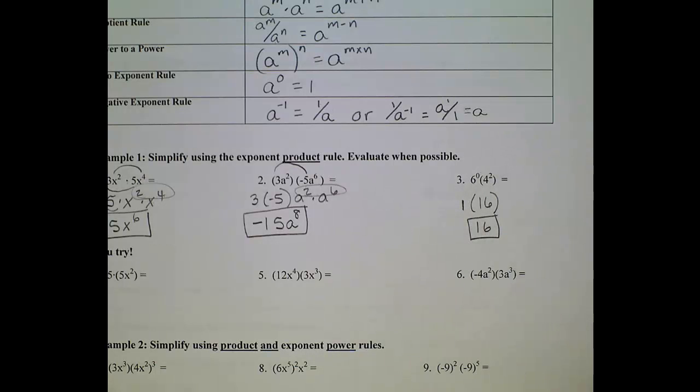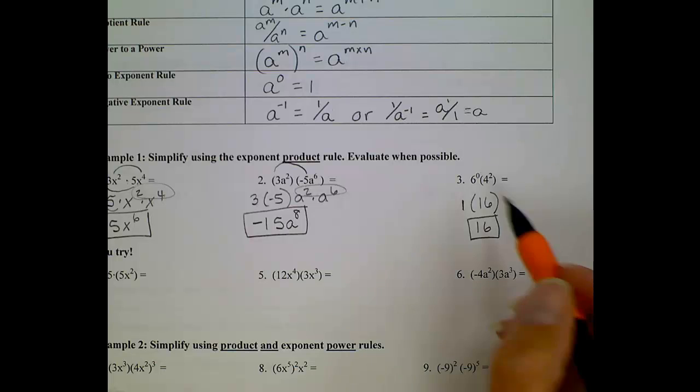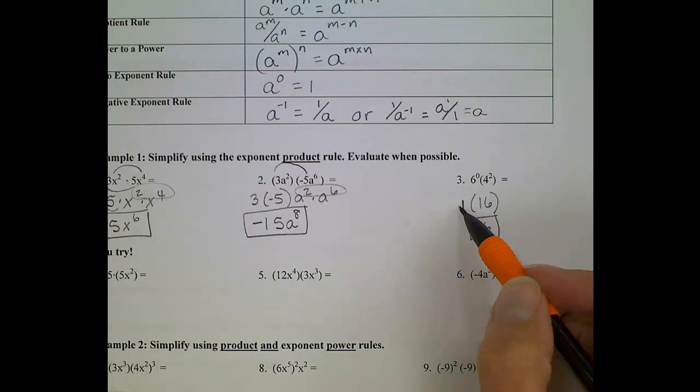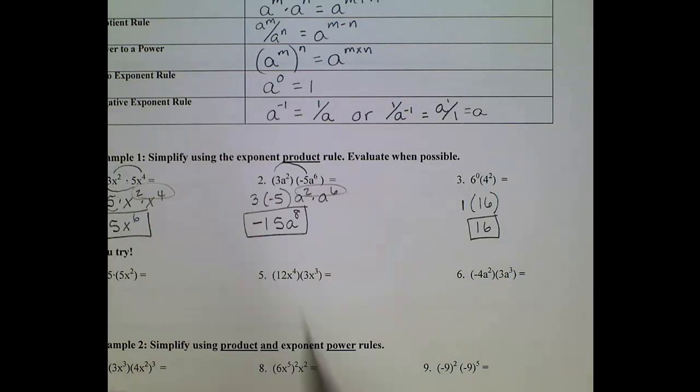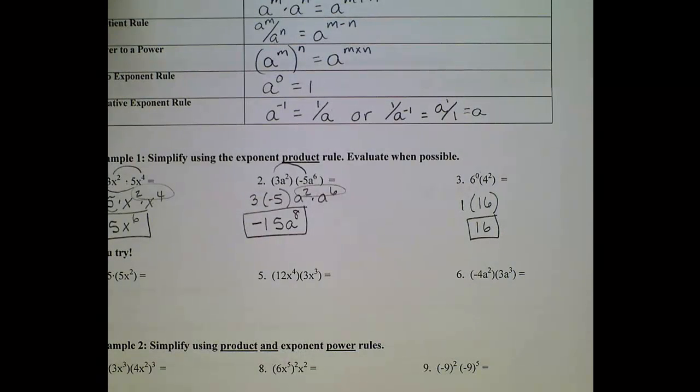Now, if we made a mistake in the beginning, and we said 6 to the 0 power is 0, and we had put a 0 in here, we'd get the wrong answer. So be real careful, remember that anything raised to a 0 power is 1. Okay, save those U tries for tomorrow, moving on down.